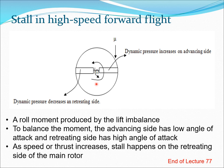A helicopter rotor cannot fly beyond a certain speed because compressibility effects appear at the blade tip on the advancing side, and simultaneously the differential between advancing and retreating blade dynamic pressure becomes larger, leading to retreating blade stall. These two phenomena — compressibility on the advancing blade and stall on the retreating blade — limit the helicopter's maximum forward speed, as the severe loads on the pitch link and control system cause vibration that prevents the pilot from flying faster. That concludes lecture 77.